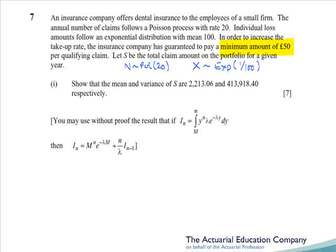Each claim will pay a minimum of £50. So actually this is again a bit like an excess of loss, but it's a minimum of 50 instead of maximum of 50, and will require copious amounts of integration by parts again. But hey, they've given us a useful formula, so it'll be slightly less painful.